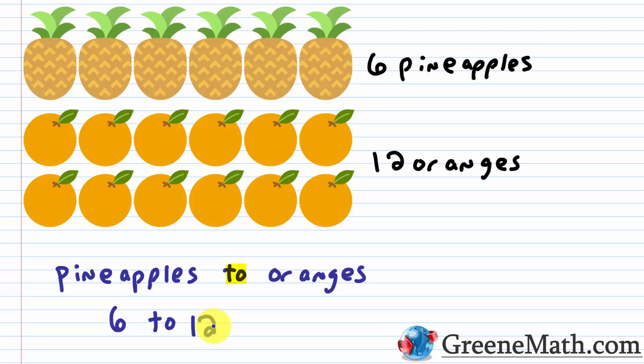So six pineapples and 12 oranges. If I want the ratio of pineapples to oranges, since I said pineapples first, I put the number six, then the word 'to', then 12. So the ratio is six to 12. Now I can simplify that. The greatest common factor of six and 12 is six. Six divided by six is one, and 12 divided by six is two. So the ratio of pineapples to oranges is one to two — meaning one pineapple for every two oranges.